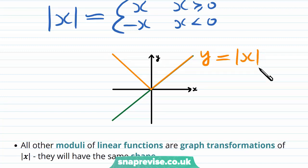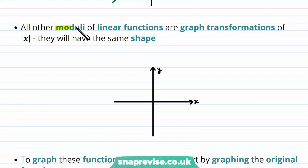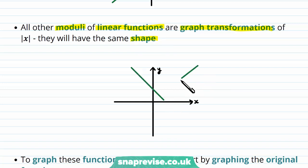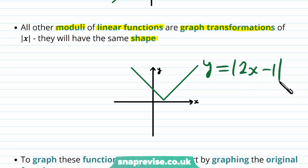All other moduli — the plural of modulus — of linear functions are graph transformations of the modulus of x, i.e. they will have the same shape. Let's say we had the following graph — this would be the graph of y equals the modulus of 2x minus 1. Notice that it has precisely the same shape as the original graph of y equals the modulus of x. It has an x-intercept at one half and a y-intercept at one.